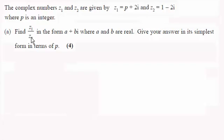So we've got to divide z1 by z2 and give it in the form a plus bi. So let's start off then with z1 divided by z2 and put down that z1 is p plus 2i and we're dividing this by 1 minus 2i.